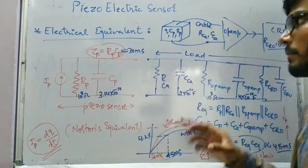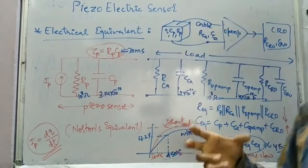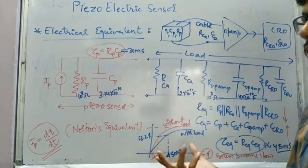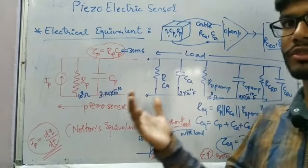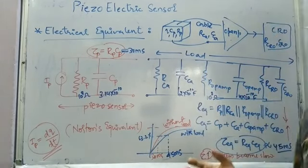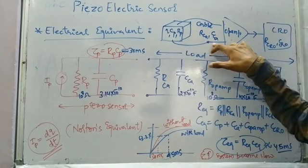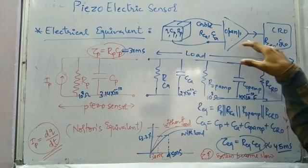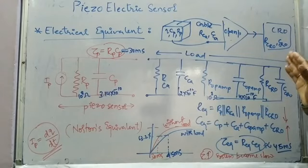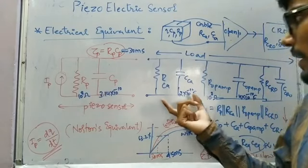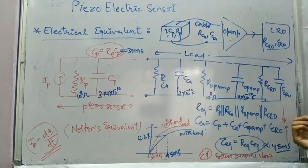In the second case, an op-amp and CRO are connected to sense the output voltage. The connecting cable has resistance and capacitance, the op-amp has its own resistance and capacitance, and the CRO also has resistance and capacitance. All these resistances come in parallel, giving a smaller equivalent resistance, and all capacitances in parallel add up to a larger equivalent capacitance.